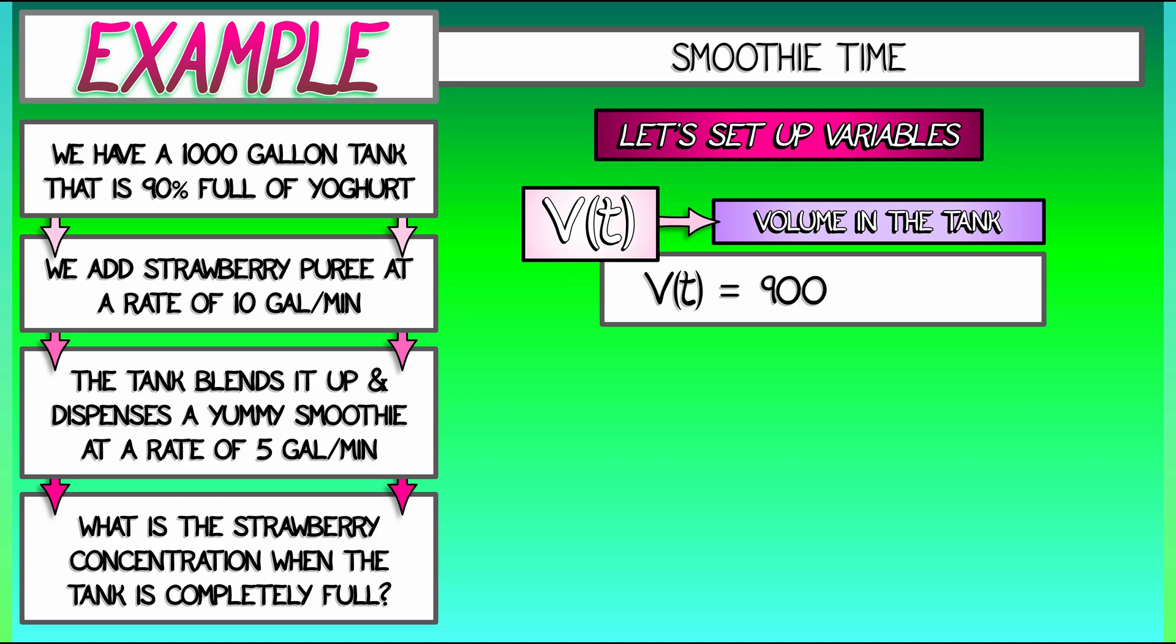Then I'm adding stuff in at a rate of 10 gallons per minute. That means that the volume is increasing at that rate, so I have a plus 10t term in the volume. But then I'm blending it up and draining the tank at a rate of 5 gallons per minute. So I have to subtract off 5t. That's our expression for the volume as a function of time.